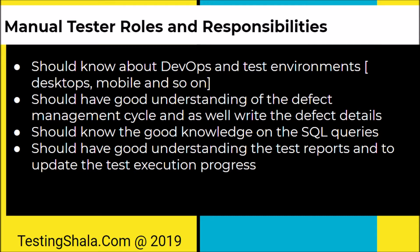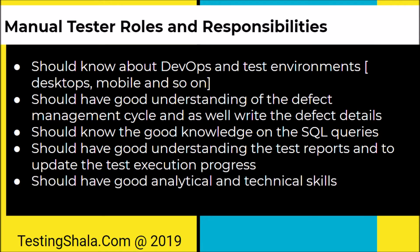A manual tester should also be a person with good analytical and technical skills. In agile scrum teams, there are typically only one or two testers per team, so that resource should be able to do everything independently. Strong analytical and technical skills help them perform their job better in scrum teams.